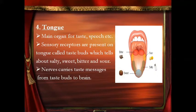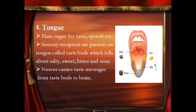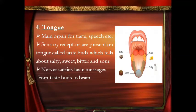The next sense organ is the tongue, which is responsible for taste and speech. Inside the tongue, there are many receptors called taste buds, and each taste bud is responsible for different tastes like salty, sweet, bitter, and sour. The tip or front end of the tongue is responsible for sweet taste, the side of the front tongue for salty, the back end for bitter, and the side of the back part for sour taste. Inside the taste buds, there are nerve cells which carry the taste messages from the taste buds to the brain.